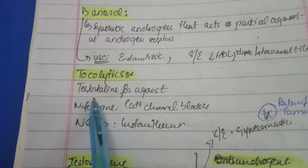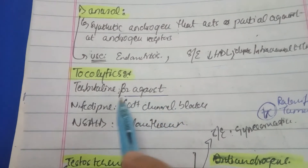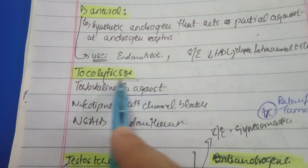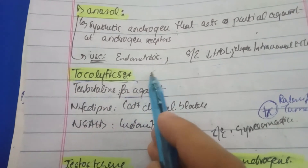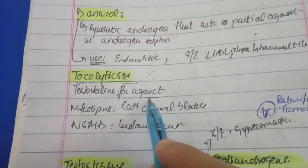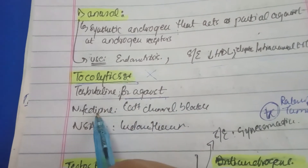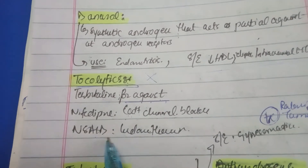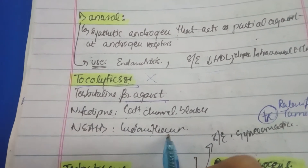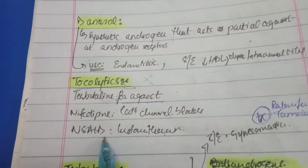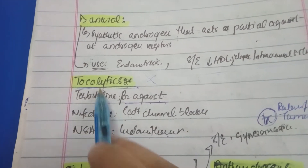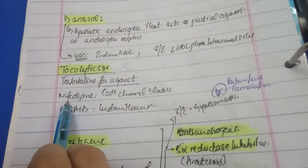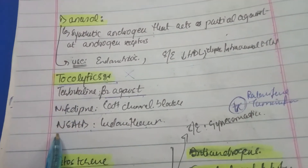Tocolytics are drugs that block premature contractions to prevent premature delivery. Terbutaline is a beta-2 agonist that relaxes muscle. Nifedipine is a calcium channel blocker that blocks calcium-mediated muscle contraction. Indomethacin is an NSAID and COX inhibitor — it inhibits prostaglandins, thereby blocking uterine and cervical softening. These are given to allow time for fetal lung maturity.